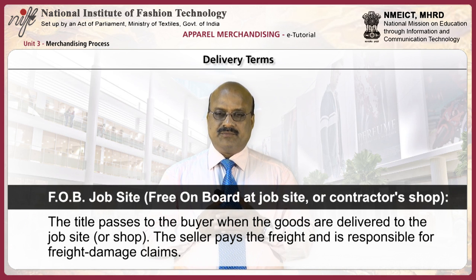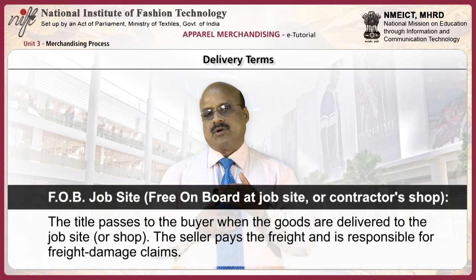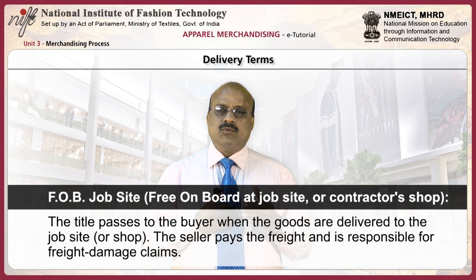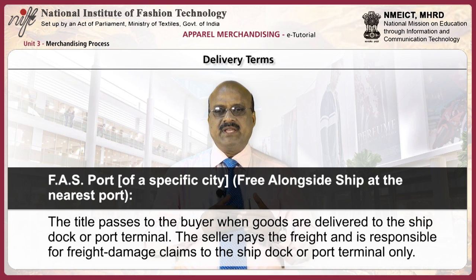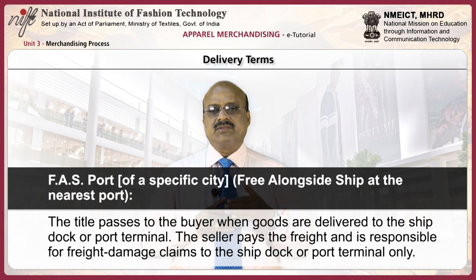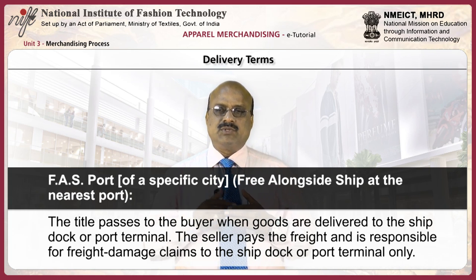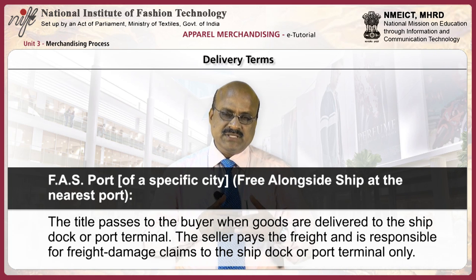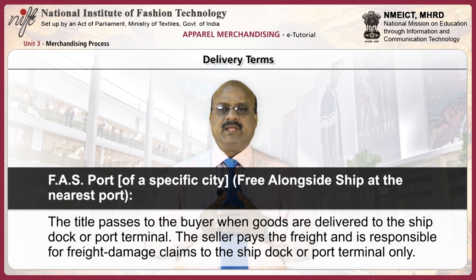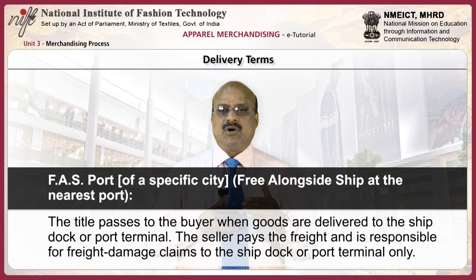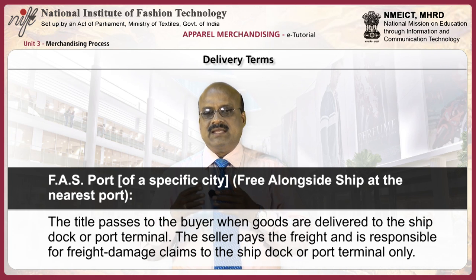FOB job site — free on board at job site or contractor's shop: the title passes to the buyer when the goods are delivered to the job site. The seller pays the freight and is responsible for freight damage claims. FAS port of a specific port — free alongside ship at the nearest port: the title passes to the buyer when the goods are delivered to the ship dock or port terminal. The seller pays the freight and is responsible for freight damage claims to the ship dock or port terminal only. The buyer pays the freight and is responsible for freight damage claims from the ship dock or port terminal to the designated delivery point.